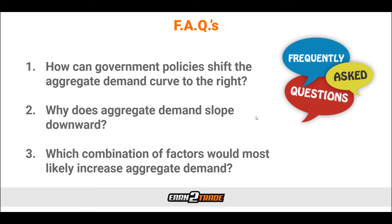Now for some frequently asked questions. Number one: how can government policies shift the aggregate demand curve to the right? There are numerous ways, including maintaining relatively low interest rates, reducing the tax burden, working towards full employment, and encouraging exports. Full employment equates to more disposable income, while low interest and tax rates ensure that consumers retain a larger share of their income and business costs remain relatively low. Historically, interest rates have been used as the tool of choice by many central banks and governments, although disinvestment and investment strategies in the economy can also have a similar impact.